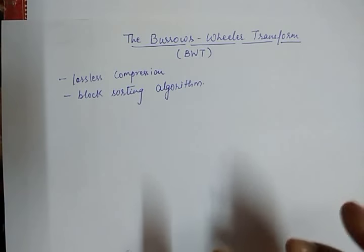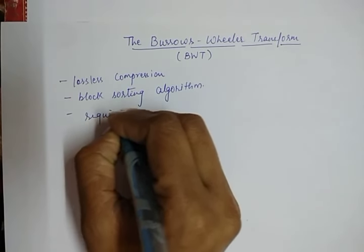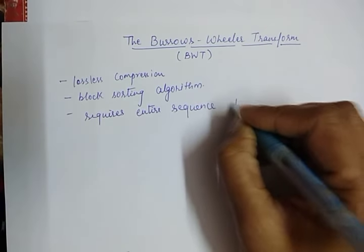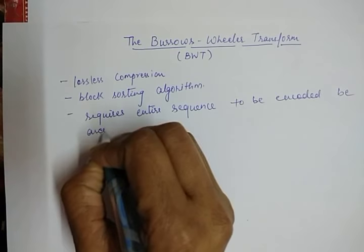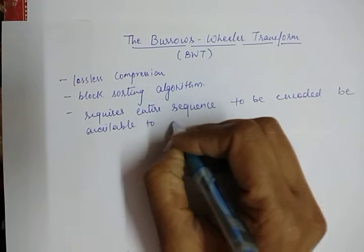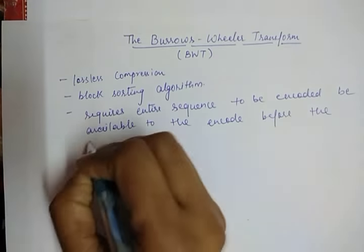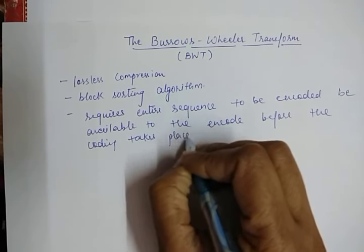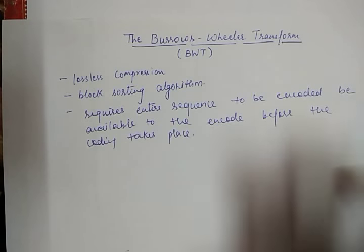For encoding purposes, we require the entire sequence to be encoded to be available to the encoder before the coding takes place. This means before doing the encoding part, the encoder knows the entire sequence that is to be encoded.